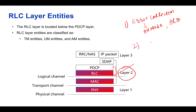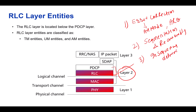The second main function is segmentation and reassembling. RLC can break down large packets from the PDCP layer into smaller pieces that are easier to transmit over the wireless link. At the receiving end, it reassembles these pieces back into the original packet. The third function is in-sequence delivery, which is only applicable to Acknowledged Mode — RLC makes sure the data packets arrive in the same order they were sent, which is especially important for certain types of traffic.